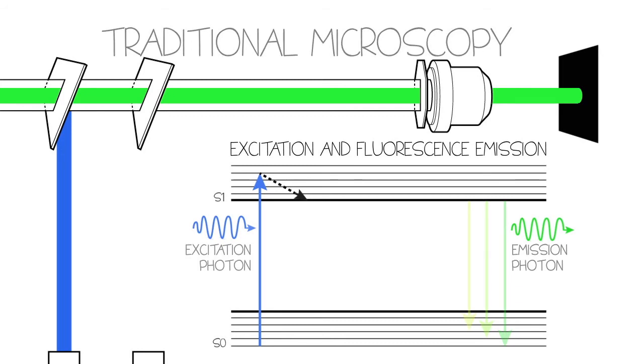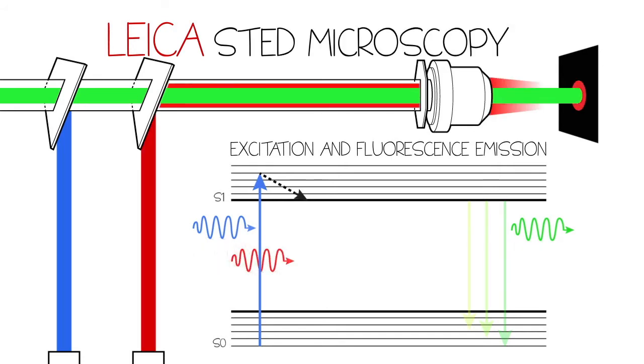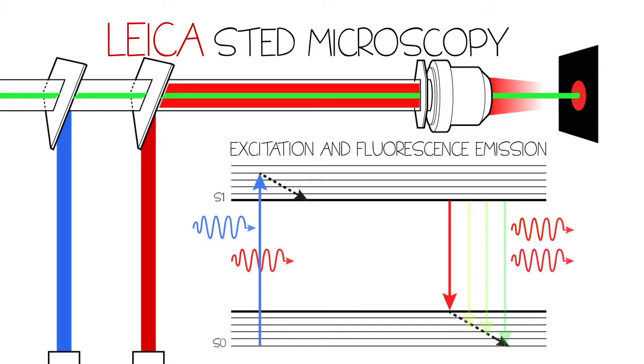However, STED microscopy introduces a second laser that modulates fluorescence emission in the periphery of the area. This produces a restricted central emission area that is smaller than the diffraction-limited spot.